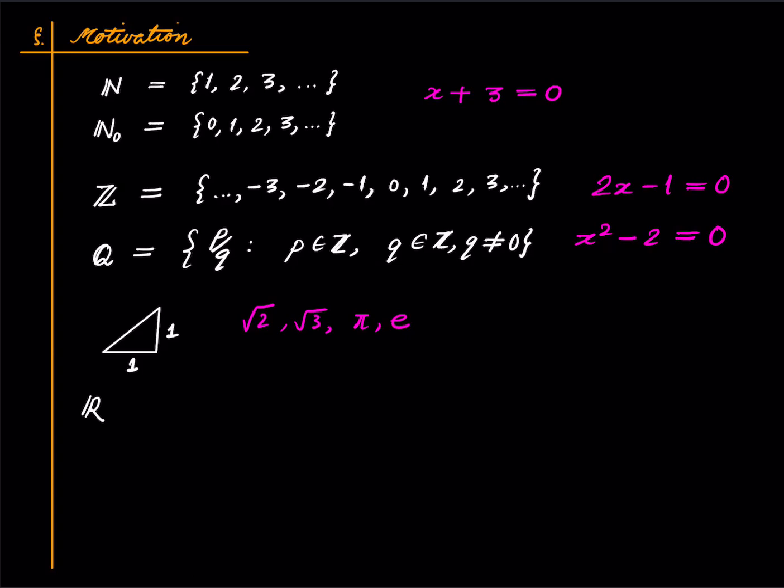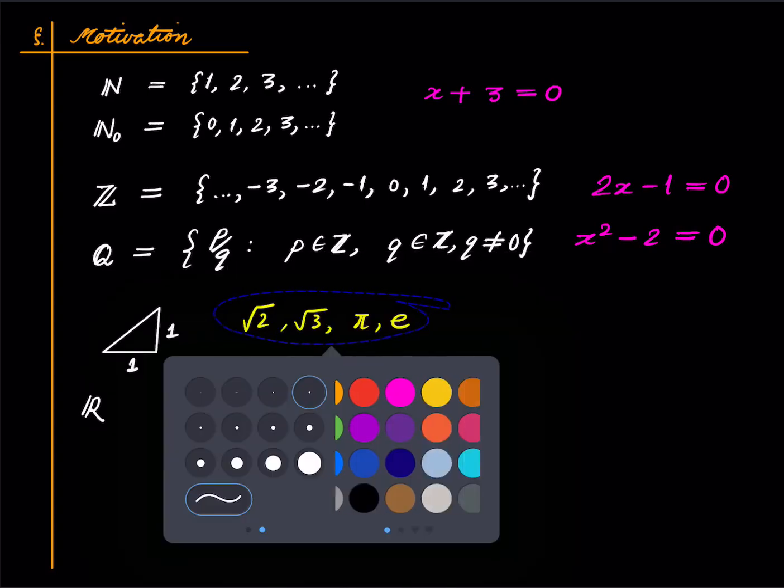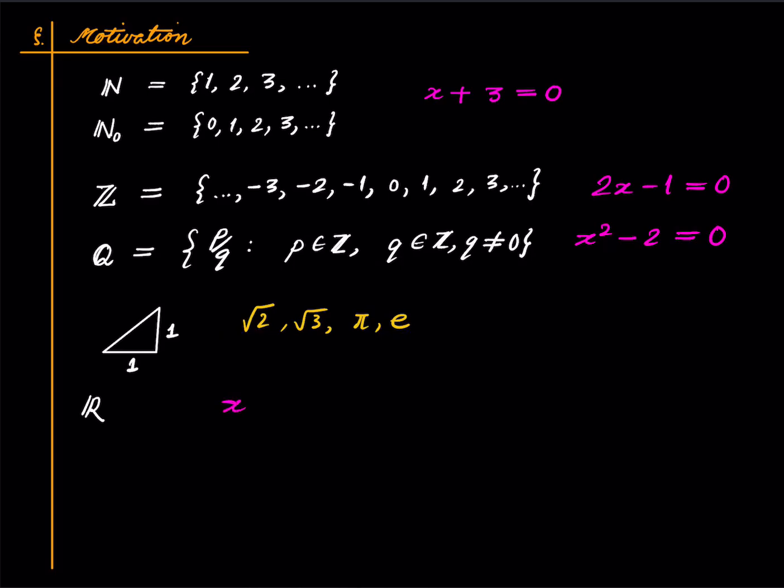But even real numbers are insufficient in some way. Real numbers cannot solve this equation x²+1=0, a very simple algebraic equation, because any real number you fit in place of x you get a positive real and therefore it cannot be zero. So again one can invent complex numbers, which we will discuss explicitly in the next lecture. One can invent something called complex numbers which are an extension of real numbers, so in some way you can embed real numbers in complex numbers just like you can embed whole numbers in integers, integers in rationals. Similarly there's an extension of real numbers called complex numbers in which you can solve this equation.